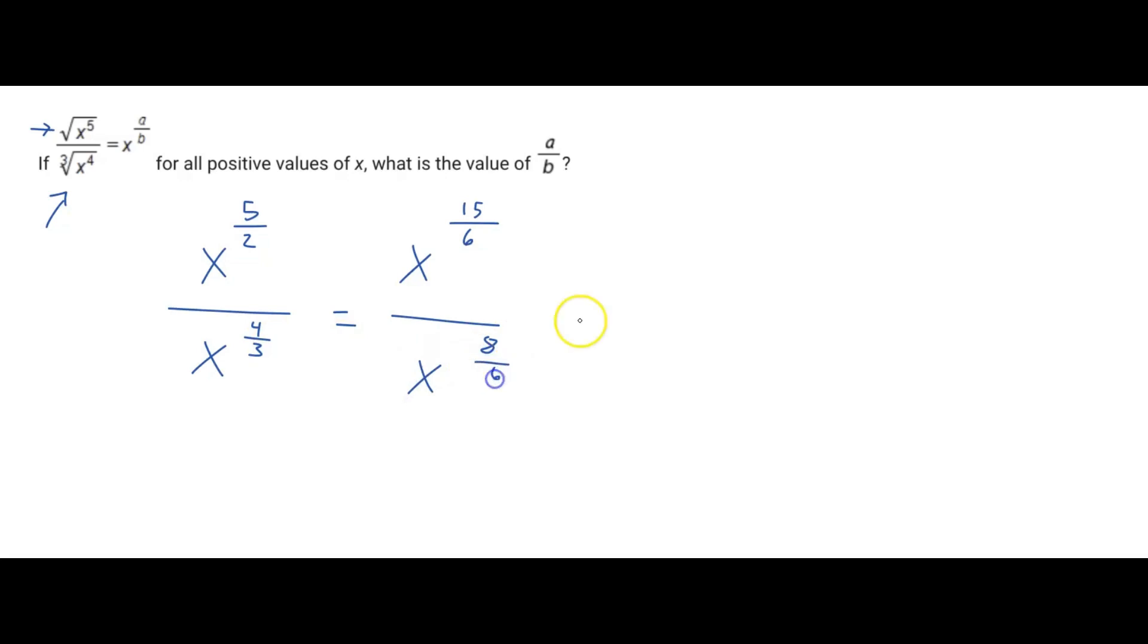And so now, because we have the same base, we can just subtract the powers. So 15 sixths minus 8 sixths is just 7 sixths.